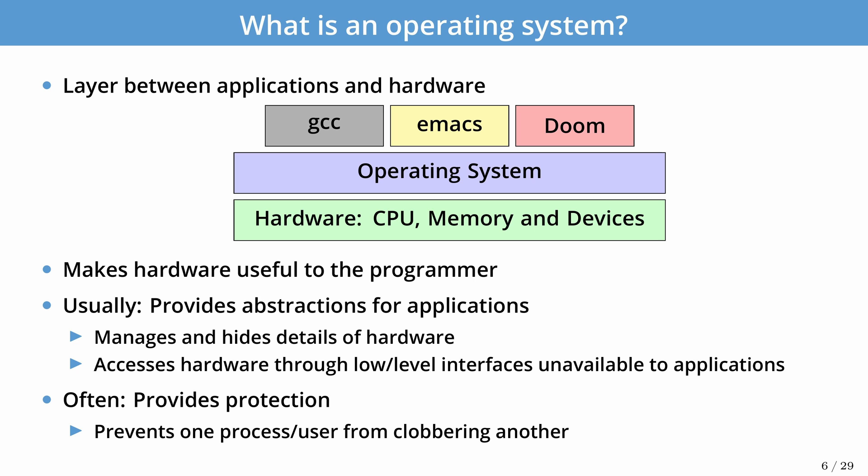An operating system is basically a layer between your applications and your hardware. The main goal is to make the hardware more useful to you as a programmer. Emacs, GCC, and even video games run on top of an operating system so they don't have to think about all the details of the hardware. The OS provides drivers that abstract away the details of different hardware versions and brands, and usually provides higher-level interfaces that make the hardware more useful.